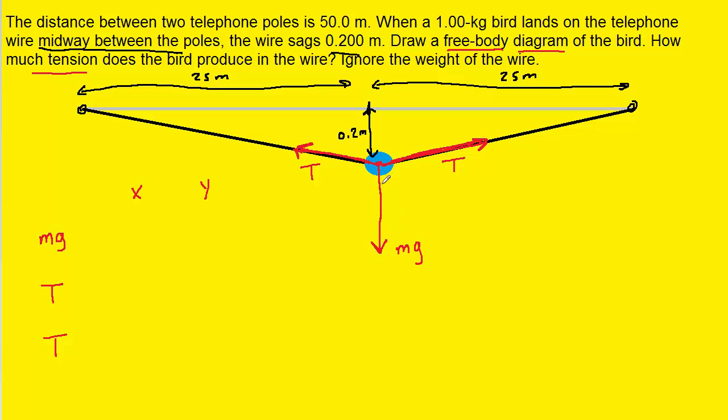The gravitational force is pointing exclusively in the downward or Y direction, which means that its X component will actually be zero. And because it's pointing downward, we're actually going to call it negative mg.